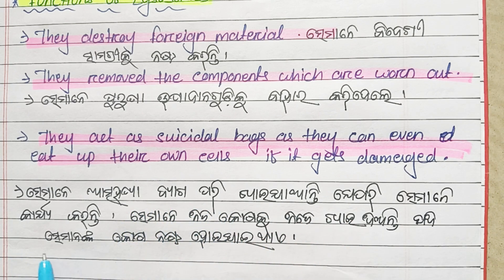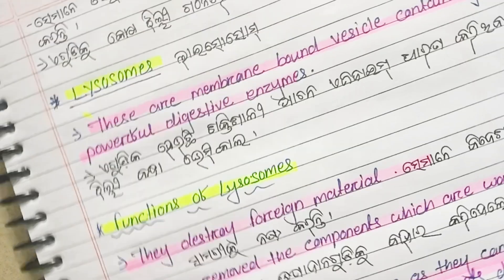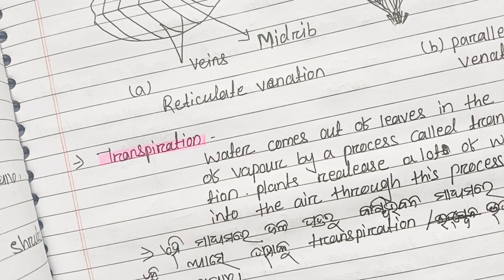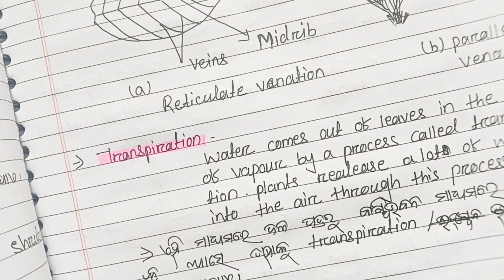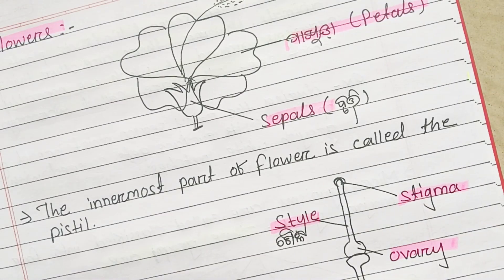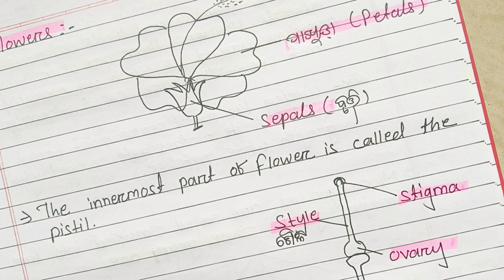So guys, today we covered plant cells and animal cells, including structure and organelles. In the description, we provide a contact number — you can reach us for all subjects. We provide teaching in general awareness, English, science, and more.